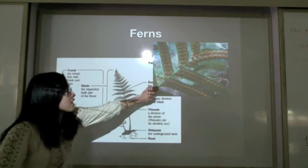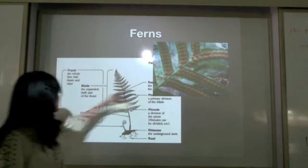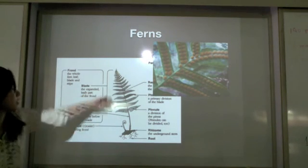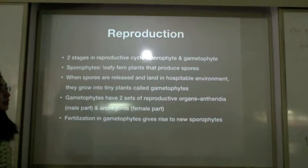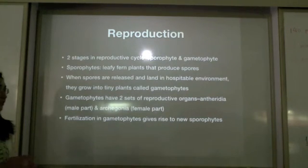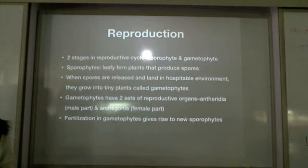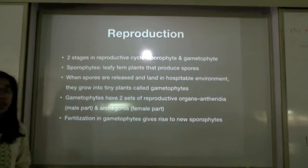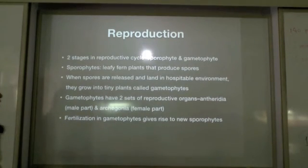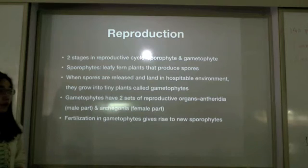There are two stages in the reproductive cycle. The first one is the sporophyte — leafy fern plants that produce spores. When the spores are released and land in a hospitable environment, they grow into tiny plants called gametophytes.